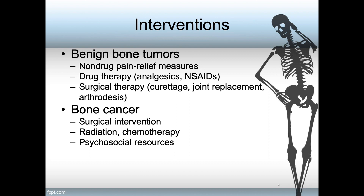Interventions for bone cancer are similar in that there is removal of the tumor. Curettage, by the way, means removal of part of that tissue away from the cavity by using a small surgical instrument that sort of scrapes. Radiation therapy and chemotherapy are also indicated for bone cancer. And of course, psychosocial resources, because the patient will be suffering from loss.